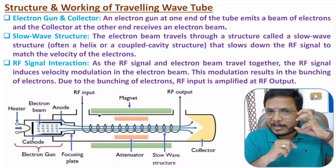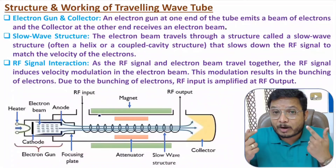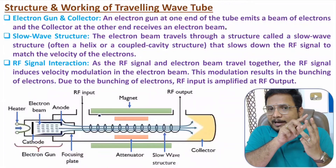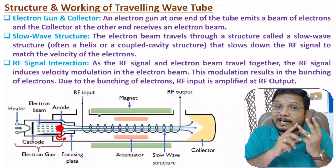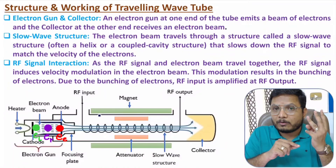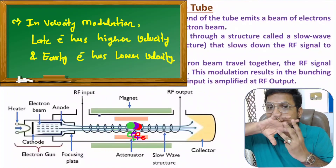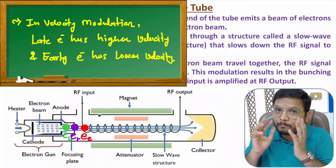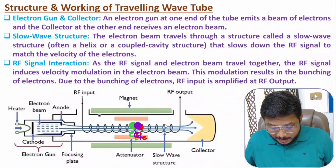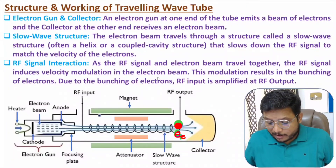When a group of electrons bunches together, the RF signal is amplified. Consider three electrons: an early electron, a reference electron, and a late electron. If the late electron has higher velocity and the early electron has lower velocity, during travel they combine together to form a bunch. Because of this bunch, there is amplification of the signal through velocity modulation of the electron beam.